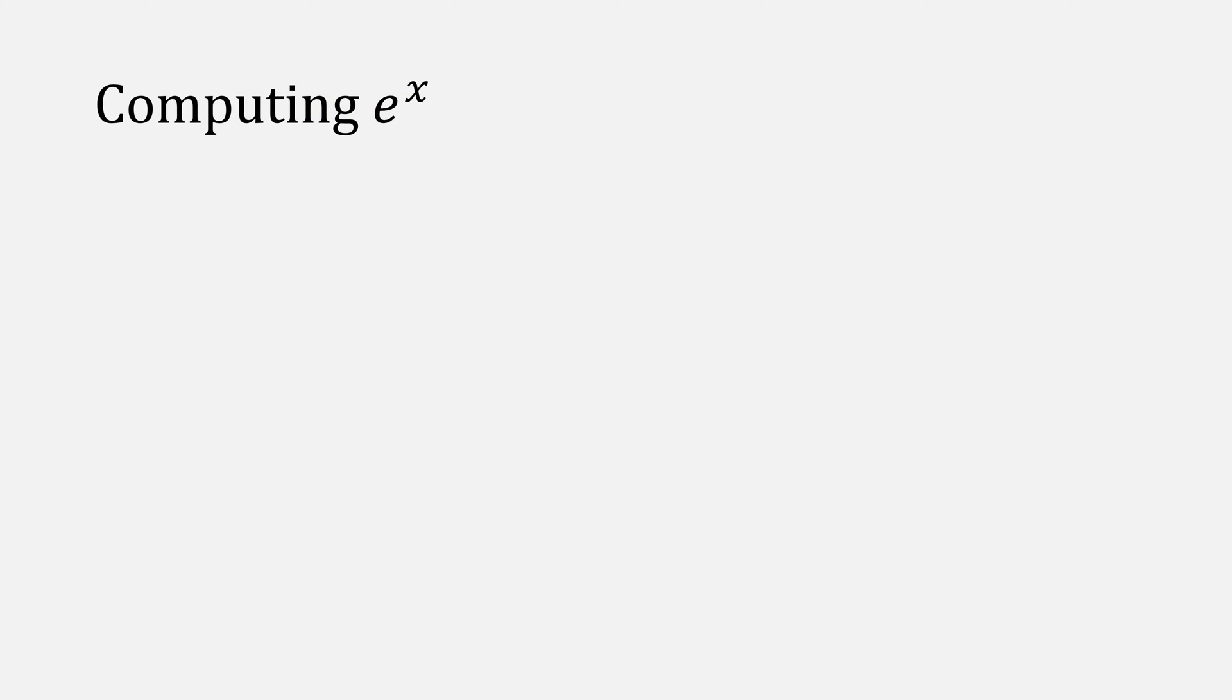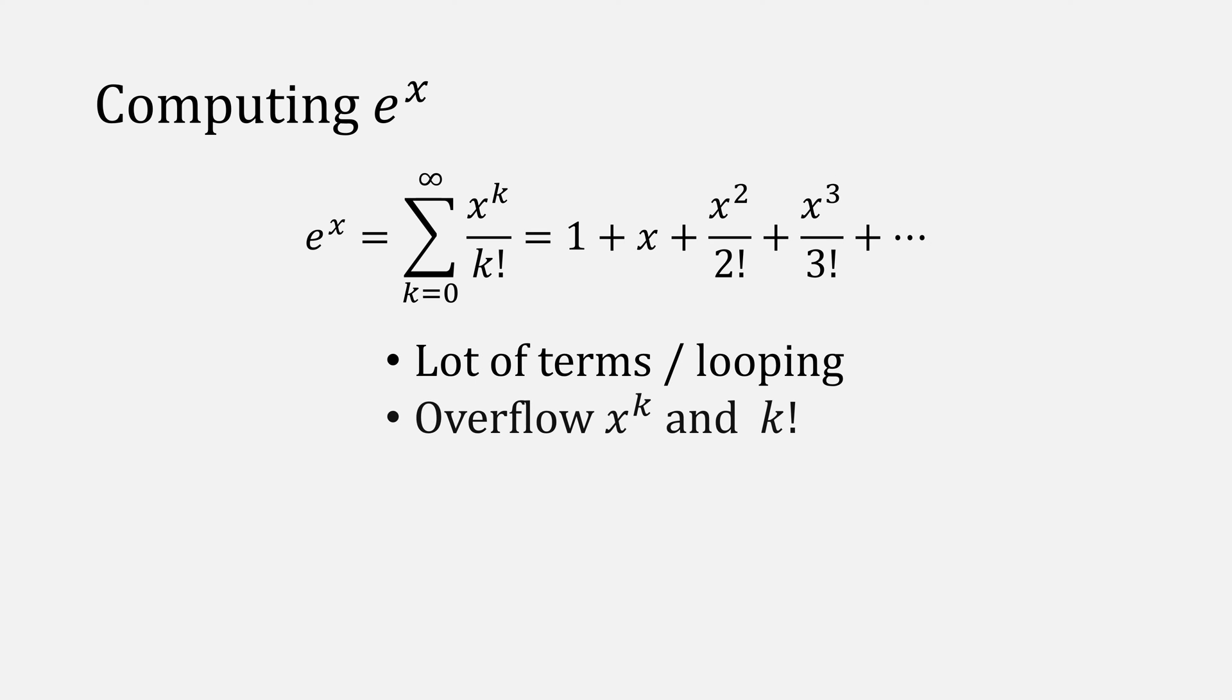E to the x is usually defined as this summation. In the computer, this can cause some issues, because one, it's a lot of looping, and it can lead to things like overflow and underflow when all these terms get very large. There's also issues with roundoff error by doing division. So we can approximate things.